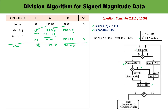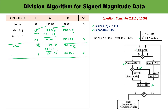Since E is 0 again, we add B̄+1 (which is 01111) into A. After addition, carry is again generated, so we set Q0 to 1. Q becomes 0011, and the sequence counter decrements to 3.